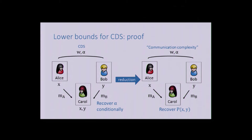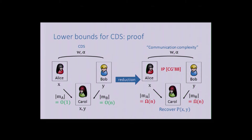The naive approach would be to just send MA and MB from the CDS as the communication complexity protocol. But this doesn't work: for inner product, CDS can actually do better than the linear lower bound—achieving sizes 1 and n, or n and 1. So MA and MB alone do not determine P(X, Y), and the reduction is not that simple.